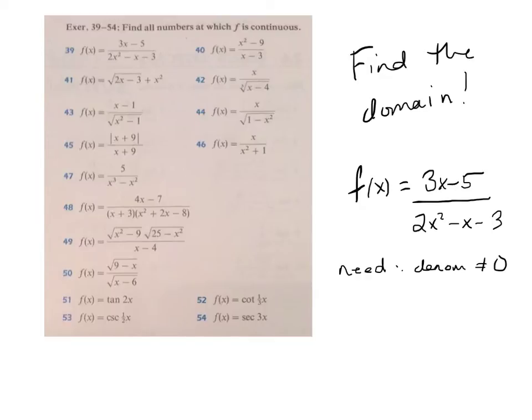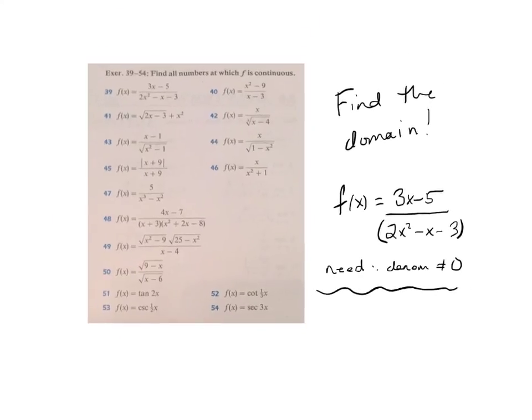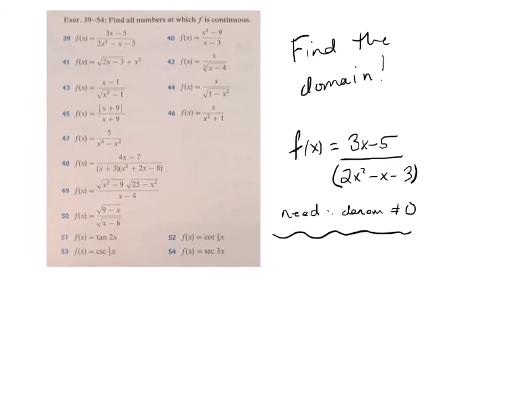3x minus 5 over 2x squared minus x minus 3. In some sense, this is the easiest possible thing. What we need is the denominator not equal to 0. In other words, we need to take this guy, factor it.